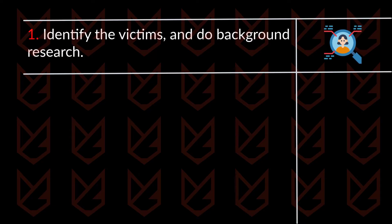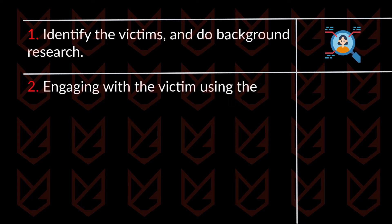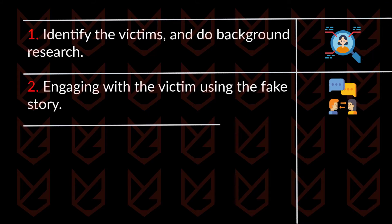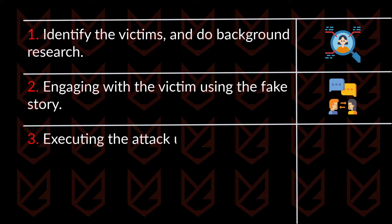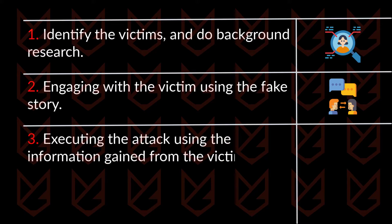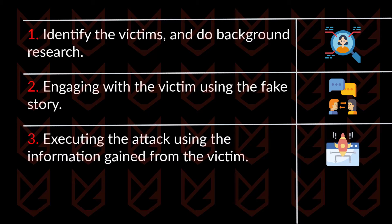Next, the attacker would start frequently engaging with the target by spinning a fake story, thereby psychologically taking control of the victim. Now in the third step, the attacker would execute the attack using the knowledge gained by tricking the user. After the victim performed what was intended by the intruder, he would likely sabotage the system without making the victims realize it.